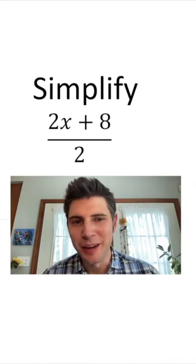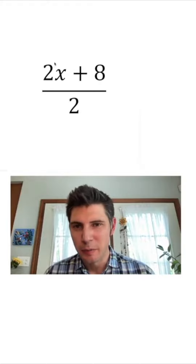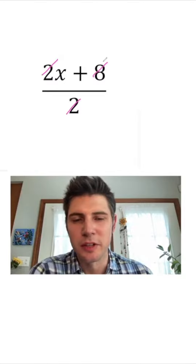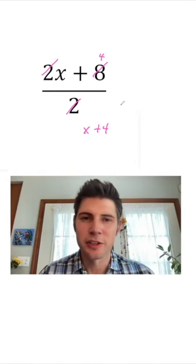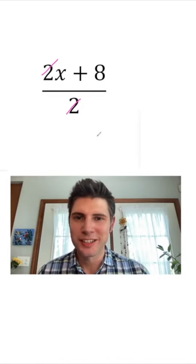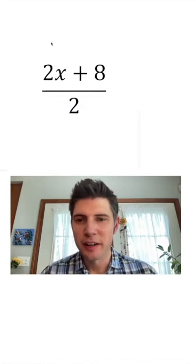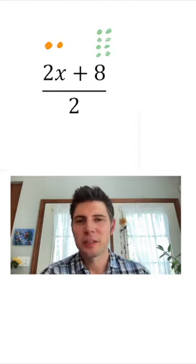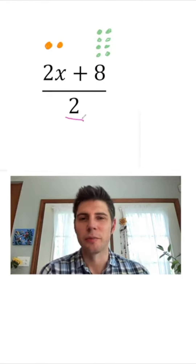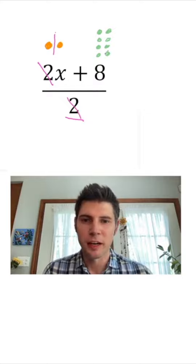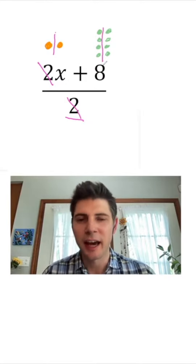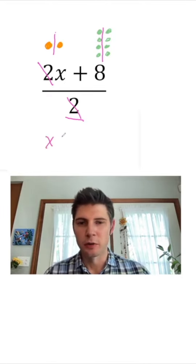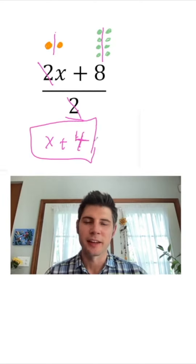I wanted to talk about a common mistake people tend to make. If you have (2x plus 8) over 2, a lot of people want to just cancel out the twos. It doesn't work that way — the 2 is going to go to both terms. So the 8 gets changed into a 4 as well, and the correct answer is x plus 4. To understand it: imagine the 2x are 2 gold coins and the 8 are silver coins. You're splitting these up between you and a friend — you don't want to only split the gold and leave the silver whole. Everything on top needs to be divided by 2, giving each person 1 gold piece plus 4 silvers.